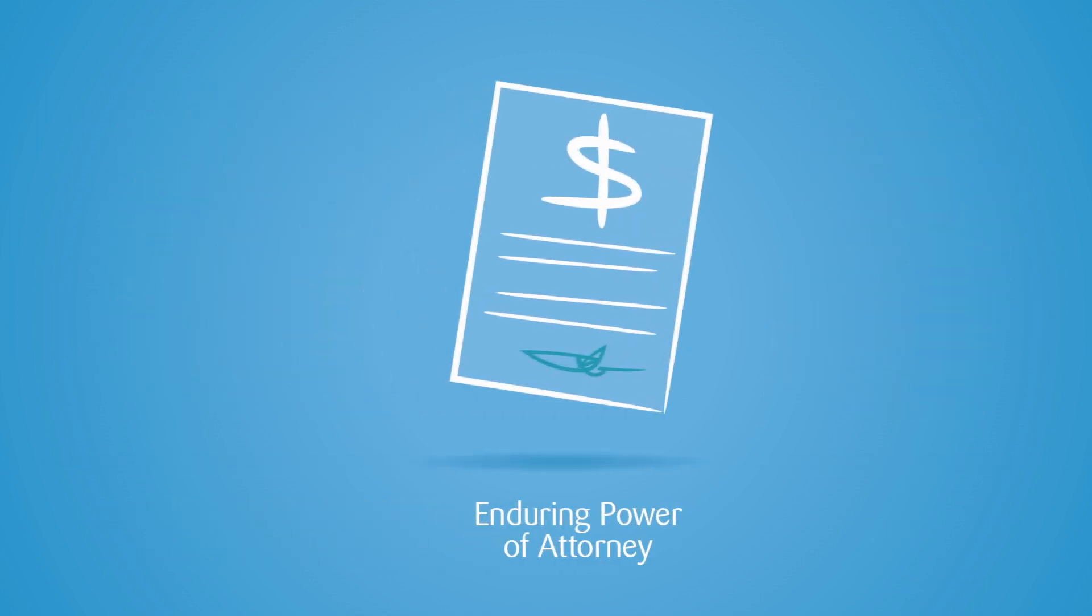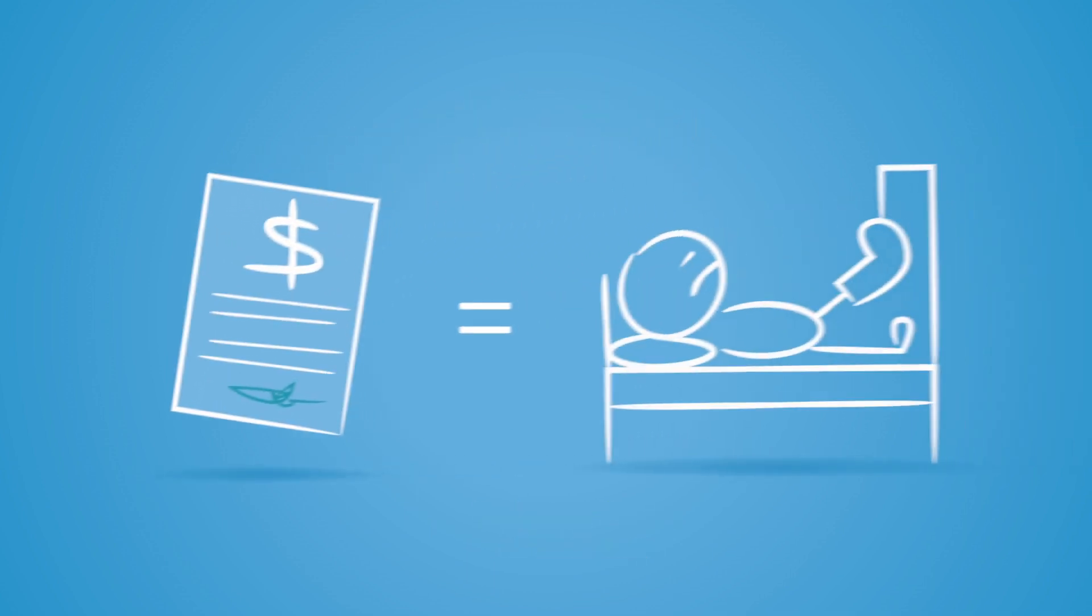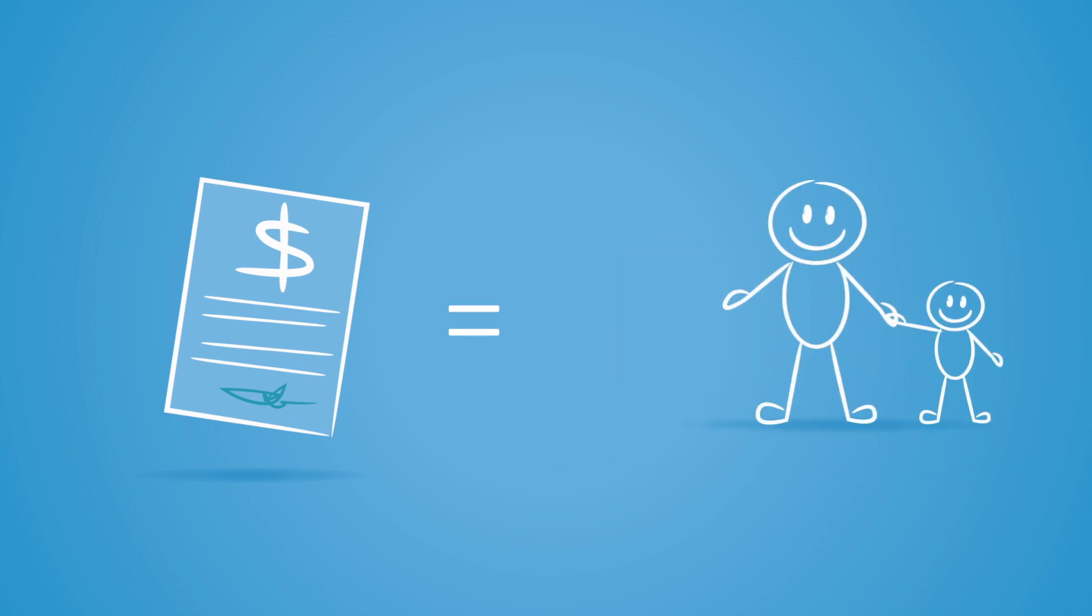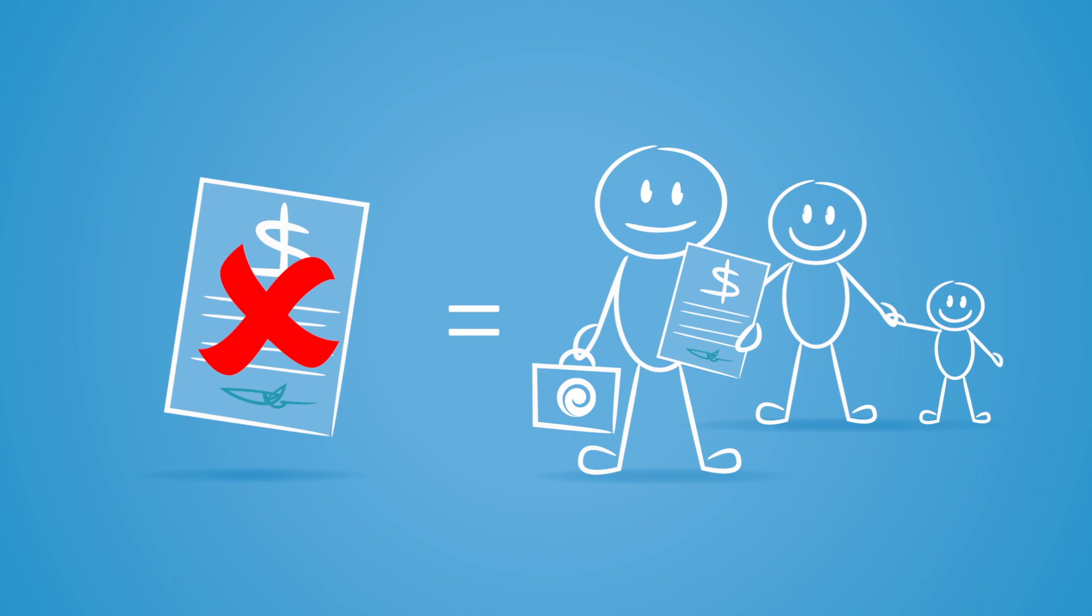Enduring power of attorney. If you are incapacitated by an accident or illness and are unable to make decisions, the enduring power of attorney names a trusted individual or organisation such as the public trustee to manage your financial affairs.